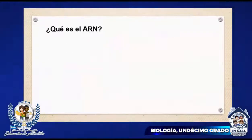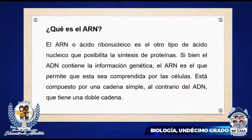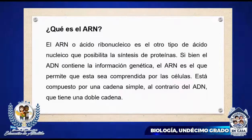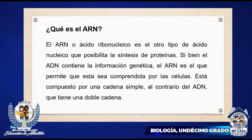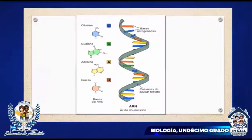¿Qué es el ARN? El ARN o ácido ribonucleico es el otro tipo de ácido nucleico que posibilita la síntesis de proteínas. Si bien el ADN contiene la información genética, el ARN es el que permite que ésta sea comprendida por las células. Está compuesto por una cadena simple, al contrario del ADN que tiene una doble cadena. Aquí tenemos una imagen del ARN donde podemos observar que esta es una cadena simple.